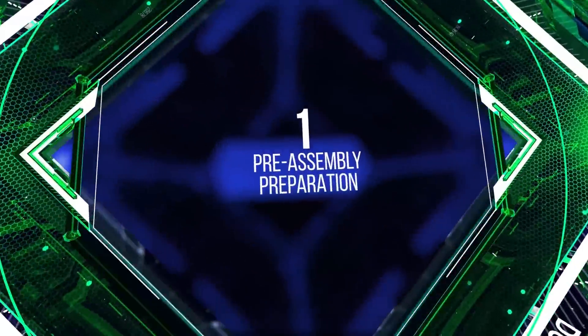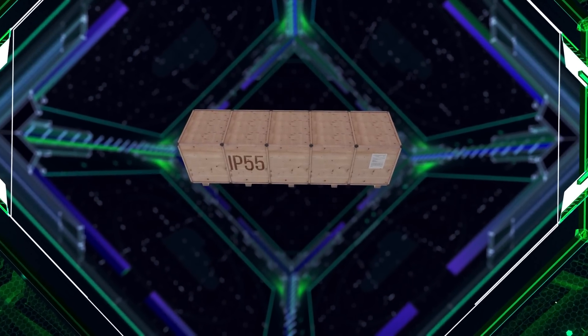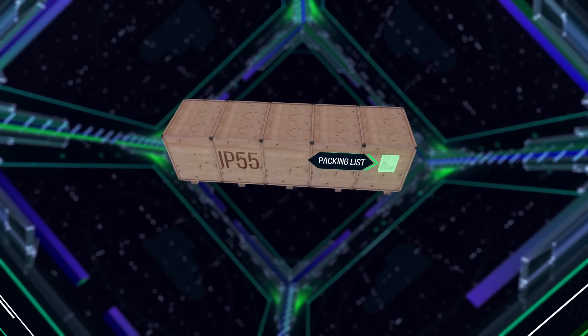Pre-assembly preparation. The sections of the KLM bus bar trunking system are delivered to the installation site in factory packaging on pallets or in cases.